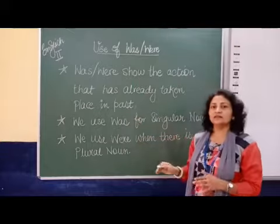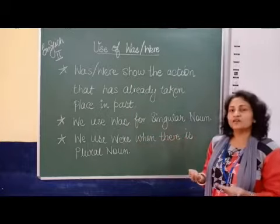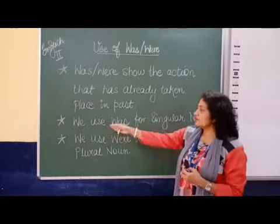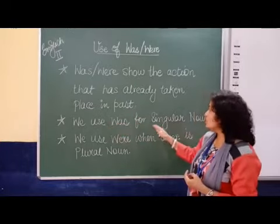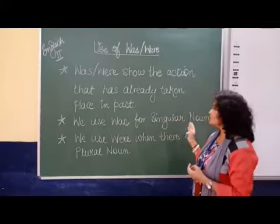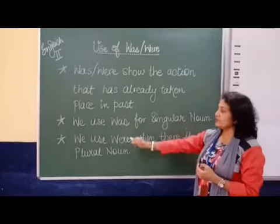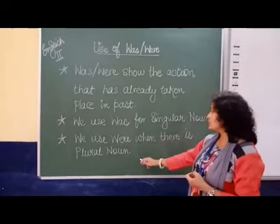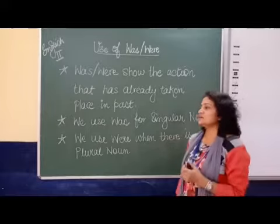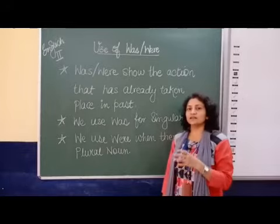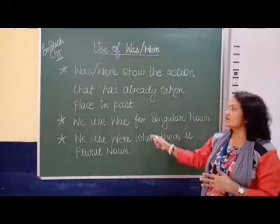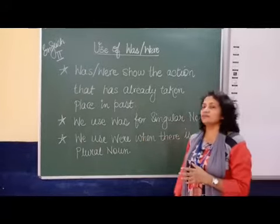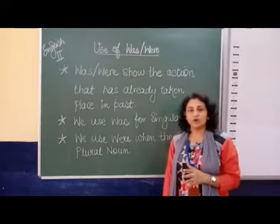That means if the action is finished. We will use 'was' for a singular noun and we will use 'were' for a plural noun. When the nouns are plural we will use 'were', and when the nouns are singular we will use 'was'.